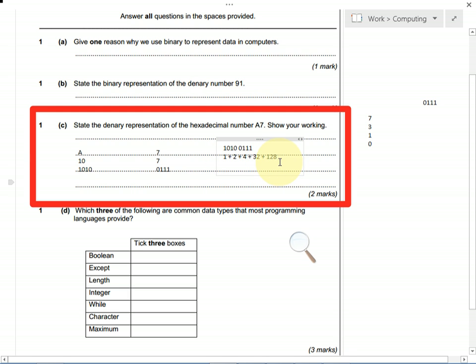So if we add all of those numbers up together, we get 167.